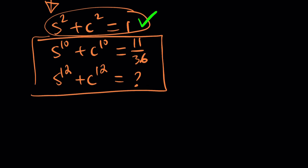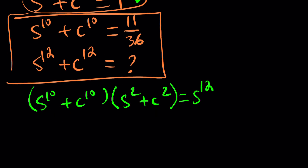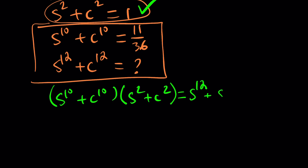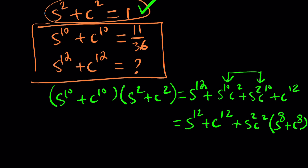Notice that if we take s to the tenth plus c to the tenth and multiply it by s squared plus c squared, that's going to give us 12th powers for sure, but it's also going to have an extra term. Distributing gives s to the twelfth, plus s to the tenth c squared, plus s squared c to the tenth, plus c to the twelfth. This simplifies to s to the 12th plus c to the 12th, plus s squared c squared times the quantity s to the 8th plus c to the 8th. So we'd need the sum of the 8th powers and the product s²c².